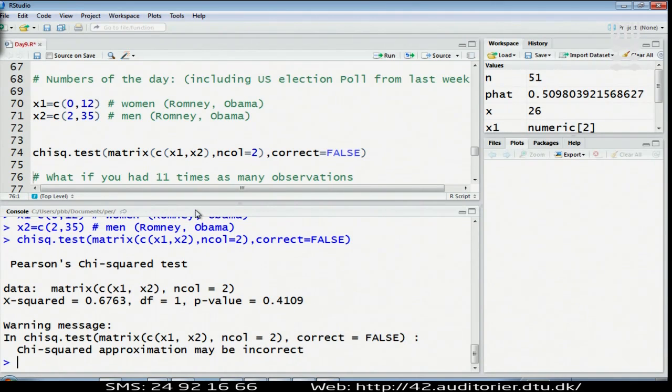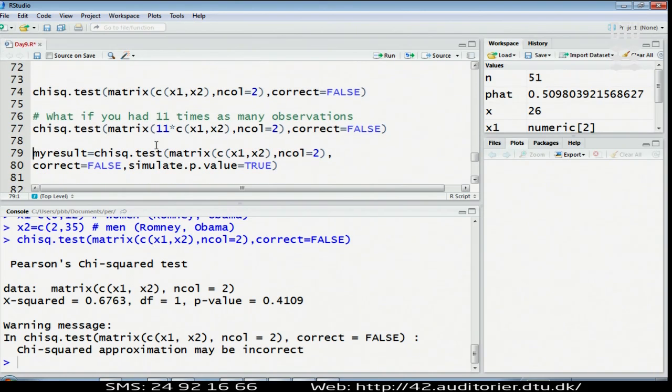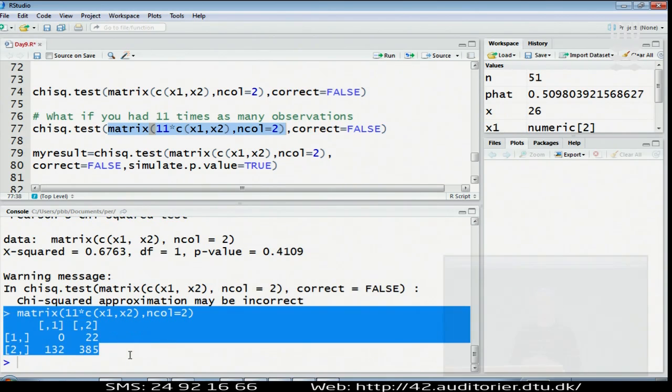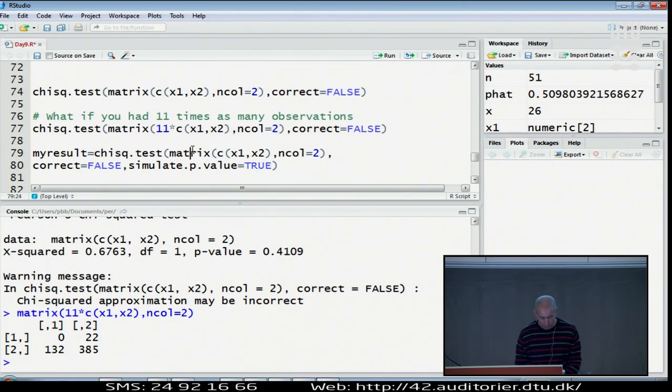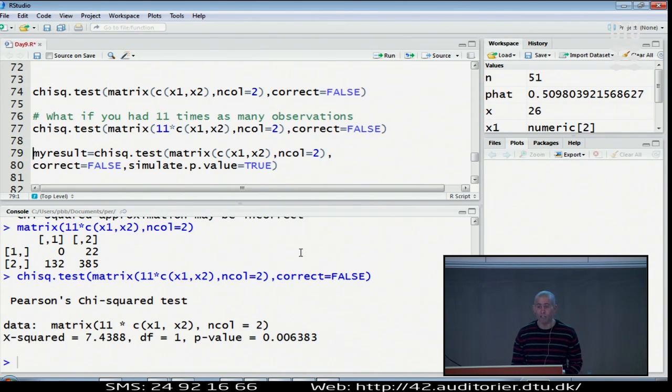Let's say, what if I had the same observations, at least the same proportions, but I did a much larger study? I did a study which was 11 times larger, so I had around 500 people in the sample instead of just 49. I multiply my data by 11 - I chose 11 because it's the minimum number to make this work. If I multiply my data by 11 and do the chi-square test, I get a p-value with no warning. Actually, if I got the same proportions in a data set with 500 people, I would see a gender difference here.